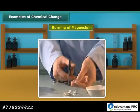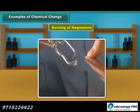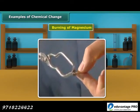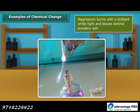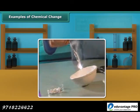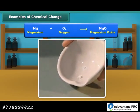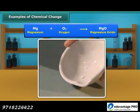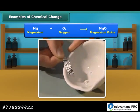Take a small ribbon of magnesium and bring its tip near a flame. It burns with a brilliant white light and leaves a powdery ash called magnesium oxide. This ash has different properties than magnesium, therefore burning of magnesium is a chemical change.